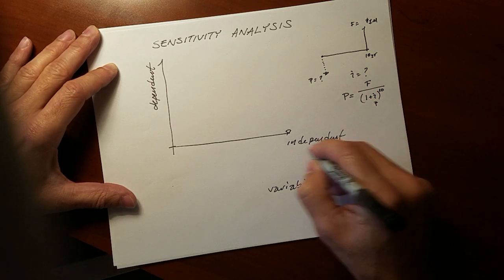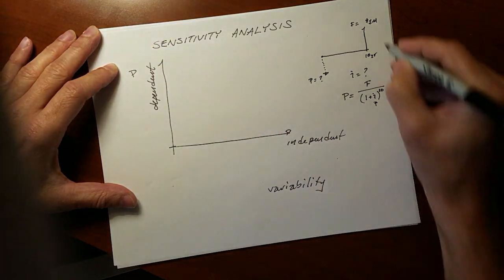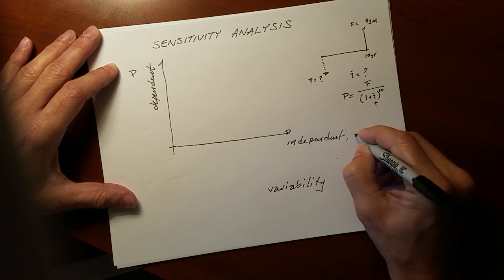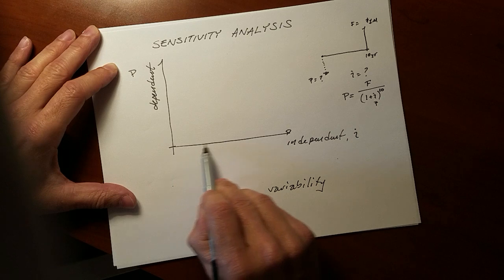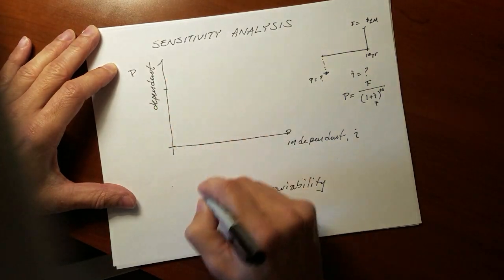So if we were going to explore the sensitivity of P to the 1 million dollar F as a function of this independent variable I, we would draw I along the horizontal axis, P along the vertical axis.